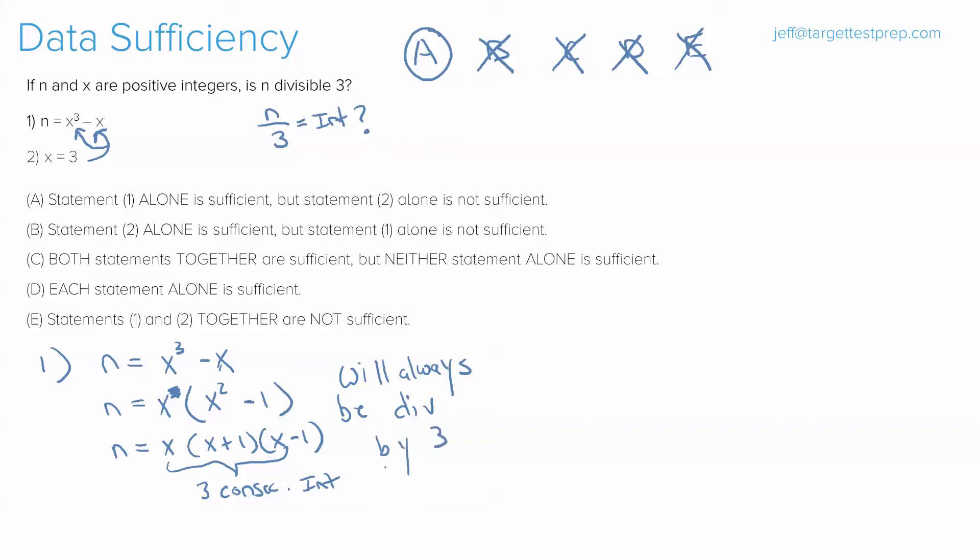Which means that the product of those three consecutive integers will always be divisible by 3. And with that said, we know that the answer here is A, as we proved before. Of course, statement two does not work because there's no talk of n in statement two, and we need to know if n is divisible by 3.